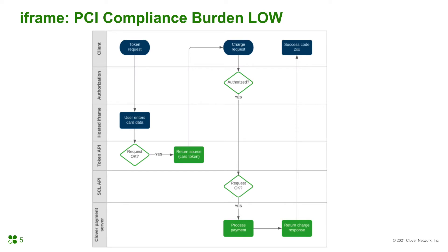The iFrame tokenizer is an embeddable, customizable component you can add to your application. It allows users to securely provide card data to the Clover servers. Using iFrame gives your app the benefit of reduced PCI-compliance burden, as well as speeding up the integration and coding process by using a pre-built component. Clover will keep the tokenizer up-to-date with any future API changes, so your app will require less maintenance.